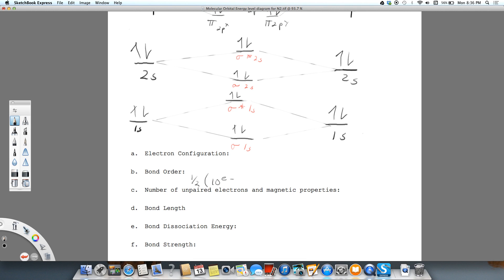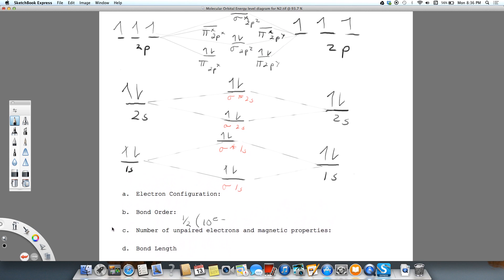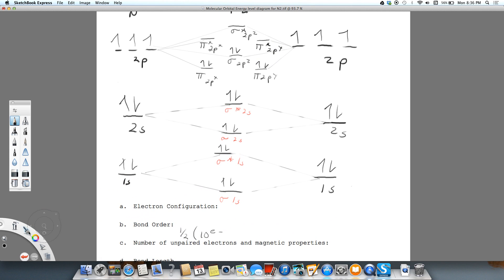So that's the 10 bonding electrons. Let's take a look and count those. 1, 2, 3, 4, 5, 6, 7, 8, 9, 10.